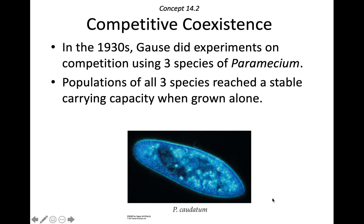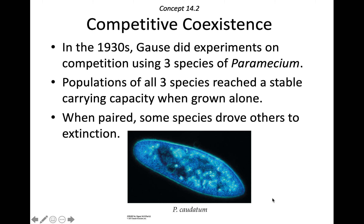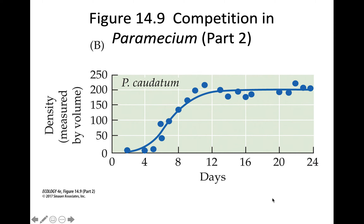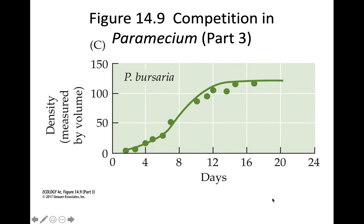All three species reach a stable carrying capacity when grown alone. But when paired, some species were driven to extinction. Here's Paramecium aurelia — P. aurelia — you can see it was grown and reached carrying capacity. P. caudatum did the same thing, and P. bursaria also did the same thing. Each one grown individually, no problem — populations grew and then reached their carrying capacity and leveled off.